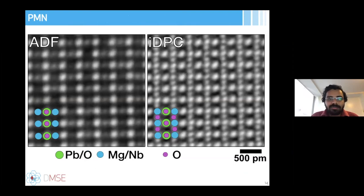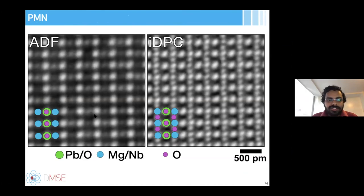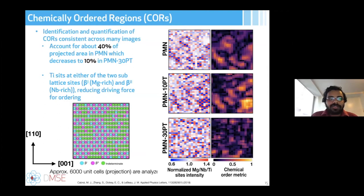We performed aberration-corrected electron microscopy imaging on the PMN system. Here are ADF and IDPC images: the ADF image shows Z-contrast, with visible contrast changes at the B-site (the magnesium and niobium side), but no contrast from oxygen atoms. The IDPC image shows clear oxygen contrast, so we can get information about all cations from ADF and about both anions and cations from IDPC simultaneously.